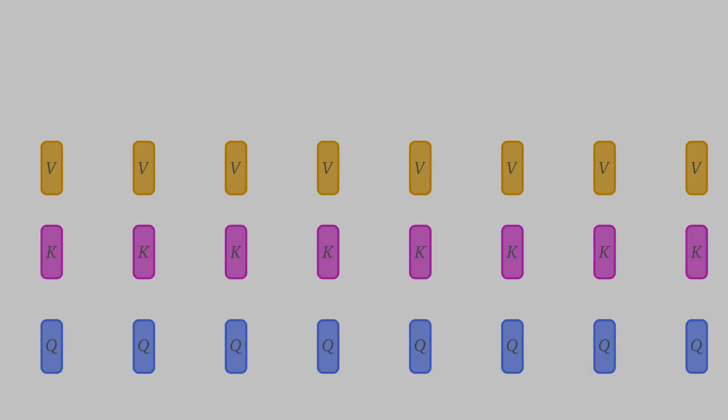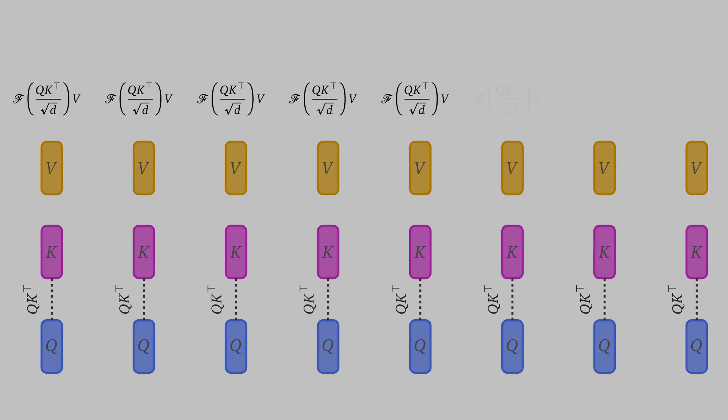In each head we perform dot product between Q and the K matrices, that is Q K transpose, which are shown with the dash lines. Then we scale the results, apply the softmax function shown as f here, and then finally multiply that by matrix V. This is performed in each head, so we get h outputs, and then we concatenate them all together.